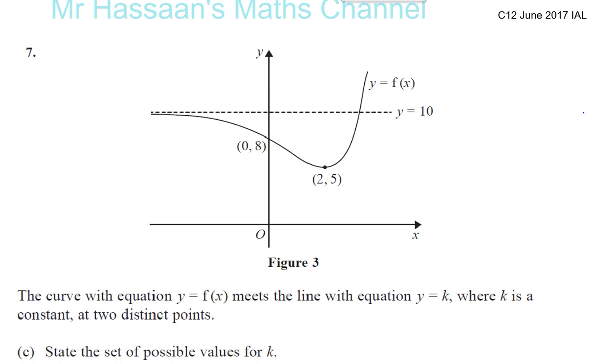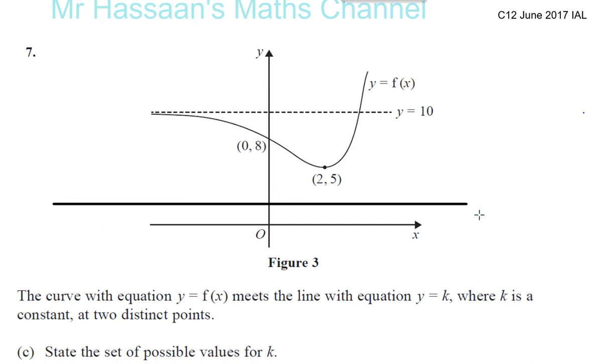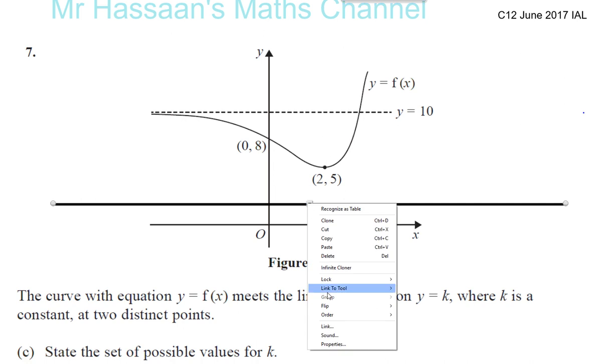So they're saying that there's a line which is a horizontal line, Y equals K. Y equals a constant. That means it's going to be a horizontal line, it's just a number, Y equals a number. So it's going to be horizontal.